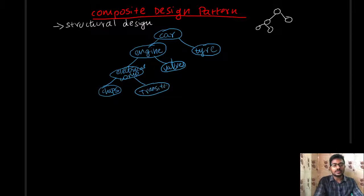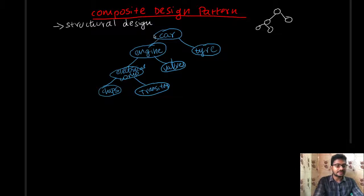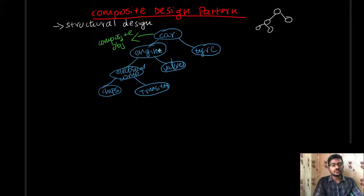So we consider a car object. There is an engine object, there is an electrical component object, there is a chips object, there is a transistor object, there is a valve object, and there is a tire object. So what is the composite design pattern? We consider the total object as the car object. This is a composite object.